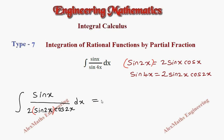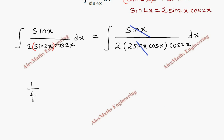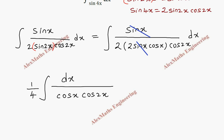Once again for sin(2x) we apply the same formula: sin(2x) = 2·sin(x)·cos(x). So the numerator remains sin(x), and the denominator becomes 2·[2·sin(x)·cos(x)]·cos(2x) dx. We can cancel sin(x) from numerator and denominator, and take 1/4 common outside the integral. So we have (1/4) integral of dx / [cos(x)·cos(2x)].